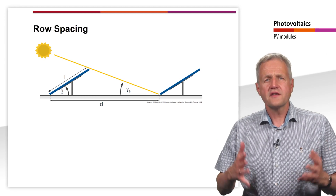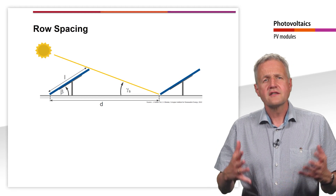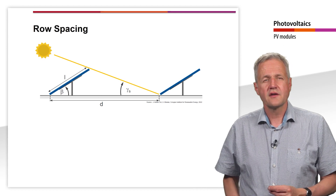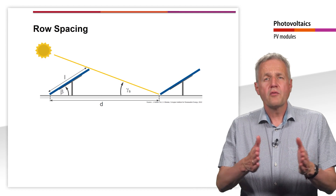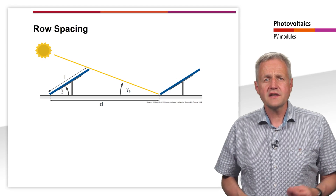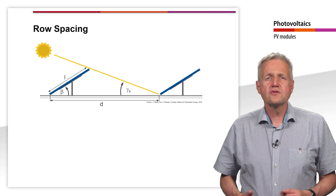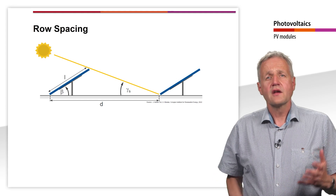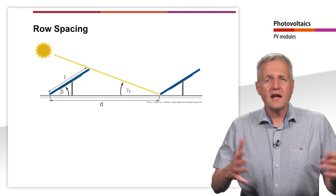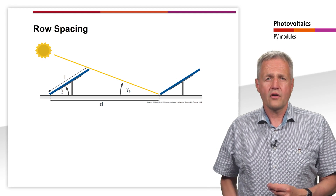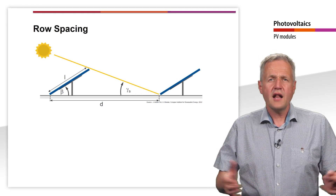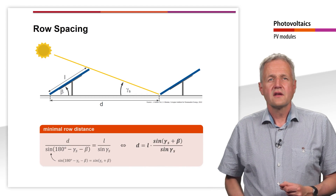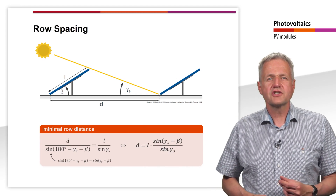However, losses due to shading cannot be completely avoided, since the shadows can reach very far when the sun is low, for example in early morning hours. In practice, the optimal row spacing for elevated PV systems is calculated in such a way that the module rows do not shade each other at true noon on the day of the winter solstice — that is the day when the lowest sun angle occurs. With the help of the sine theorem, the minimum row distance can be calculated from the equation shown here.